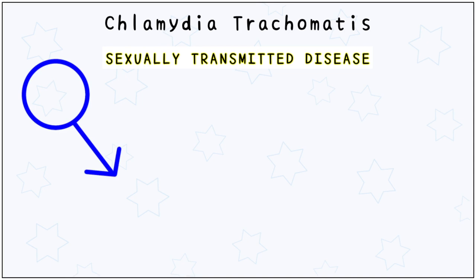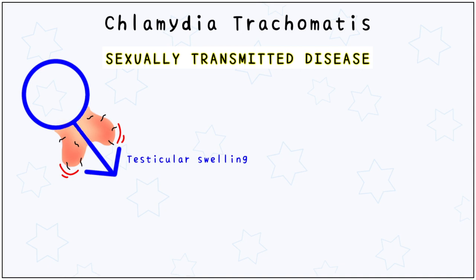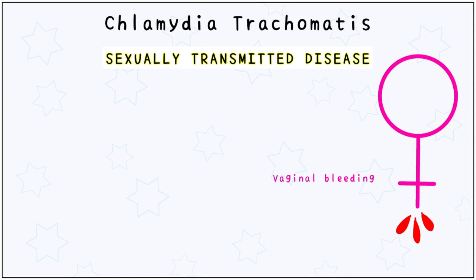Chlamydia trachomatis is a sexually transmitted disease. In males, it is characterized by painful ejaculation, burning while urination, and testicular swelling. In females, it shows vaginal bleeding, unnatural discharge, and burning while urination.